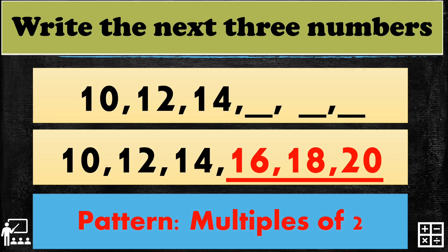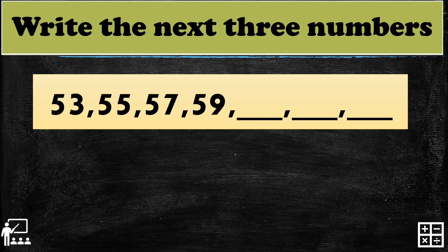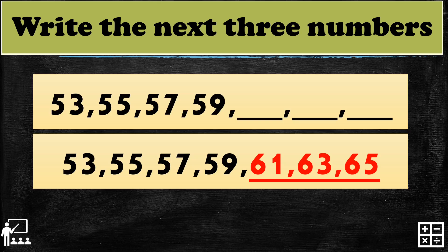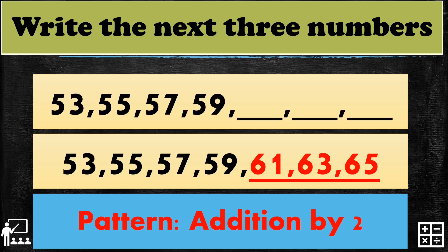Next to the last: 53, 55, 57, 59. What do you think are the three next missing numbers in the sequence? That's right — it's 61, 63, and 65. The pattern used is addition by 2.